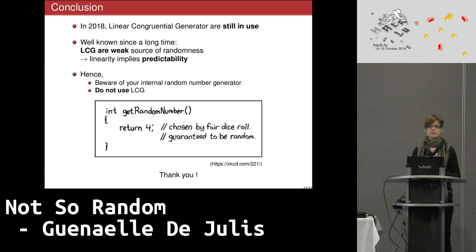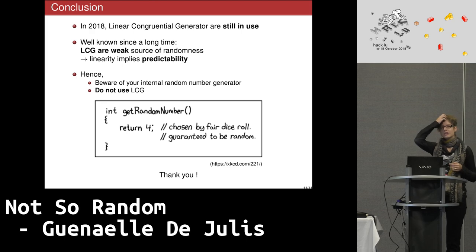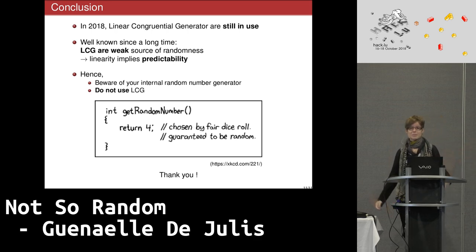If developers of a language include random generators that are not safe, maybe they should add 'insecure' to the function name. In general, if you're providing developers with a random number generator that isn't safe to use, you should put more effort into getting that message across — people are going to use it regardless of how many disclaimers are in the documentation. But it is written, so it's the responsibility of anyone who reads it.